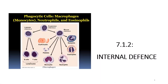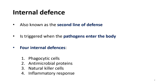Let's move to the second innate immunity called internal defense. As previously discussed, internal defense, also called the second line of defense, is triggered when pathogens enter the body. There are four types of internal defenses: the first one is phagocytic cells, followed by antimicrobial proteins, natural killer cells, and the last one is the inflammatory response.